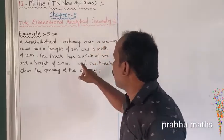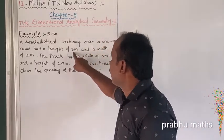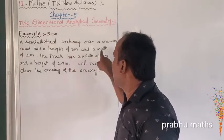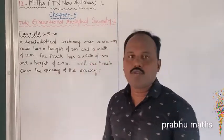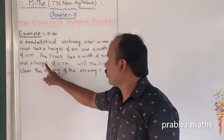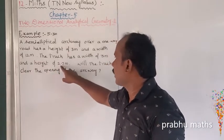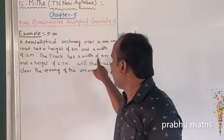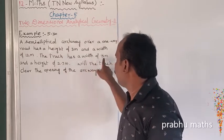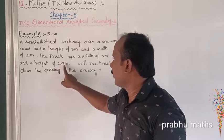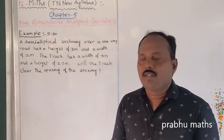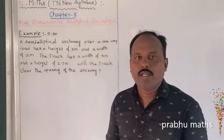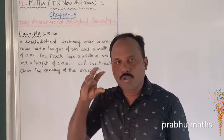Given: the archway height is 3 meters and the archway width is 12 meters. The truck width is 3 meters and the truck height is 2.7 meters. We want to determine if the truck can pass through the arch.